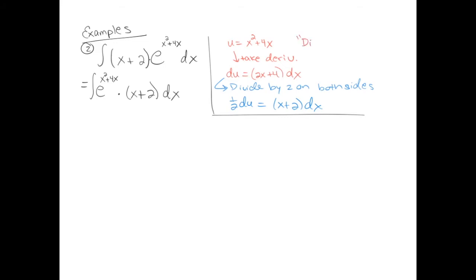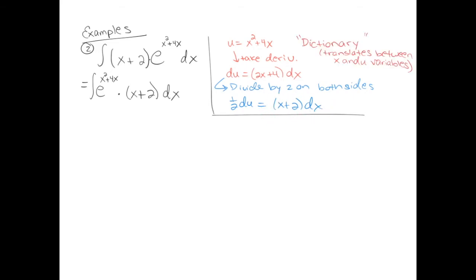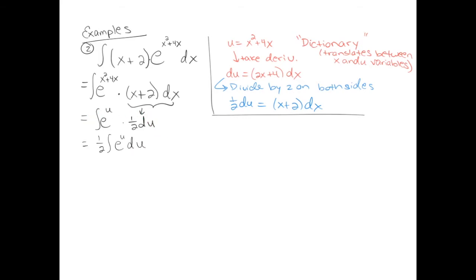If I divide my du formula by 2 on both sides, I get ½ du = (x + 2) dx. You can call this a dictionary — it's a way of translating between the x variable and the u variable. Now plug in: x² + 4x is replaced by u, giving e^u; and (x + 2) dx equals ½ du. We have a vastly simpler problem. Pull the ½ out of the integral; the antiderivative of e^u is e^u, plus c. Finally, put the x's back in: u = x² + 4x.